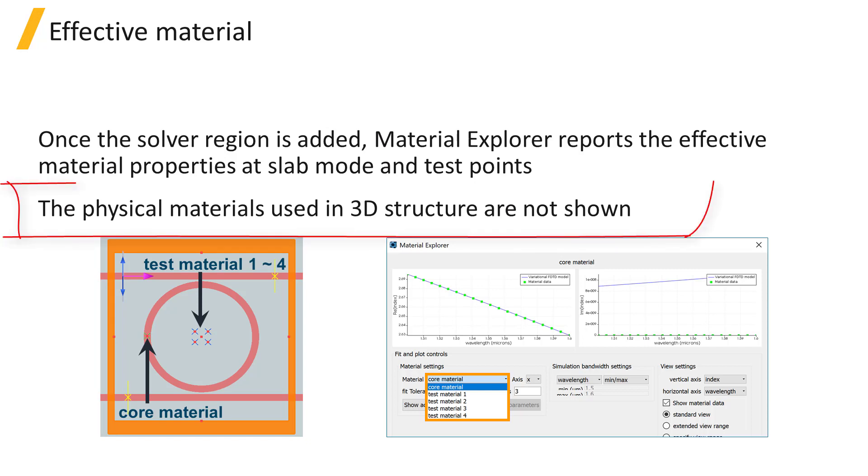The Material Explorer will not show the material properties of the physical materials used in the 3D structure, so to see the raw material data, you will need to either remove the solver region or have a different solver region active.